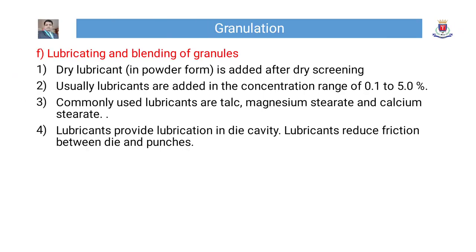Step 6 — Lubricating and blending of granules: Dry lubricant in powder form is added after screening. Lubricants are usually added in a concentration range of 0.1% to 5%. Commonly used lubricants are talc, magnesium stearate, and calcium stearate. Lubricants provide lubrication in the die cavity and reduce friction between the die and punches.